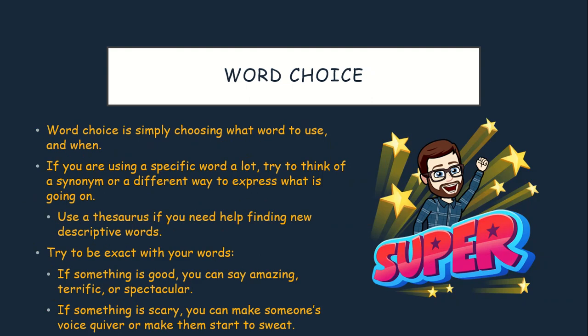Word choice is simply choosing a word and knowing when to use it — that's replacing the boring everyday words with something awesome. If you are using a specific word a lot, try to think of a synonym or a different way to express what is going on. You can use a thesaurus or a website like WordHippo if you need help finding new descriptive words. Try to be exact with your words as well. If something is good, you can call it amazing, terrific, or spectacular. And if something is scary, you can make someone's voice quiver or make them start to sweat.